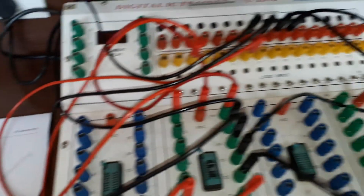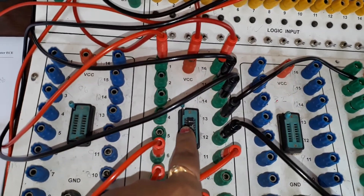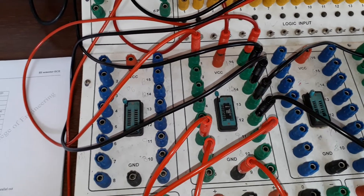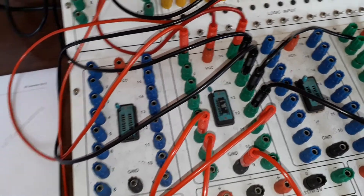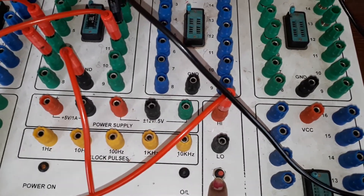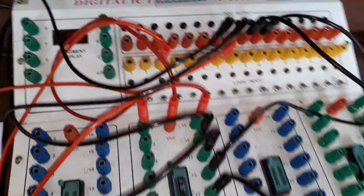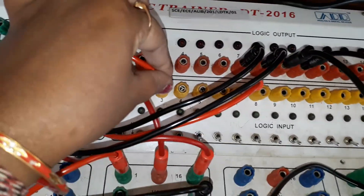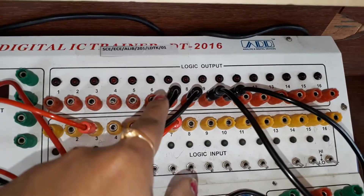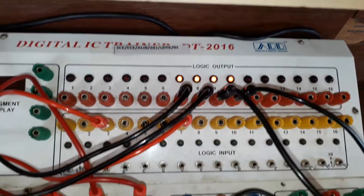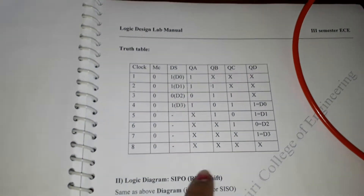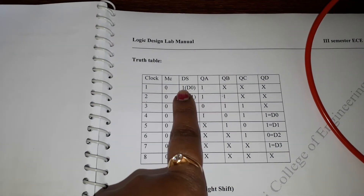Now let's look at the output on the trainer kit. We are using IC 7495 with all connections made — ground, inputs, mode control, and clock. The clock button is shown here. This pin is the mode control, this is the DS serial input pin, and these are the QA, QB, QC, QD output pins.